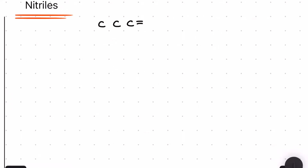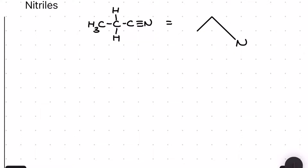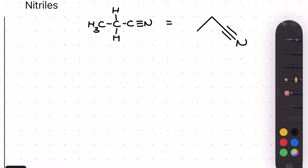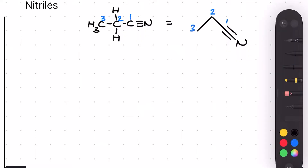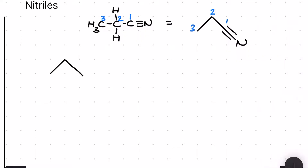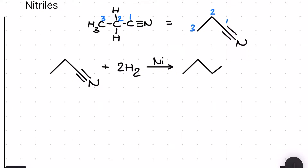Moving into our final wave of functional groups, we'll kick off with the nitriles. The nitrile functional group can be quite tricky to draw in skeletal formula — here I've got propanenitrile with a guide on how to represent it. We've already seen that a haloalkane can react with KCN in the presence of ethanol to make a nitrile, but now we're going to look at how those nitriles actually react once we've made them.